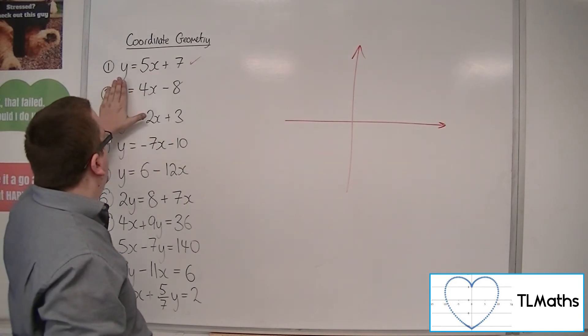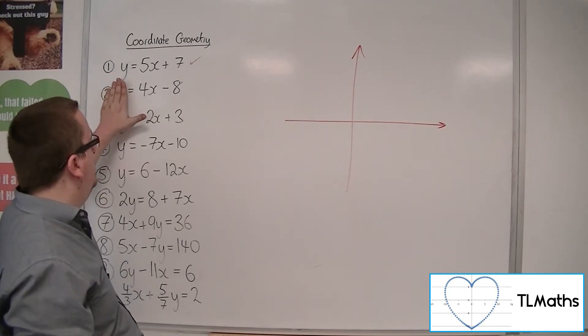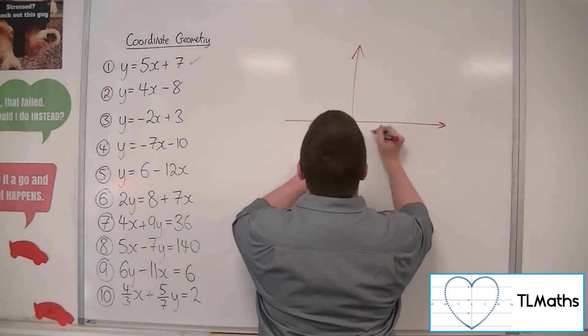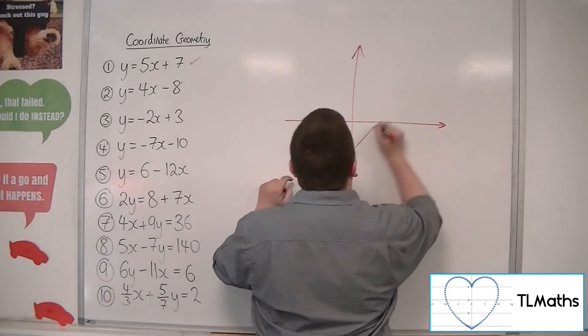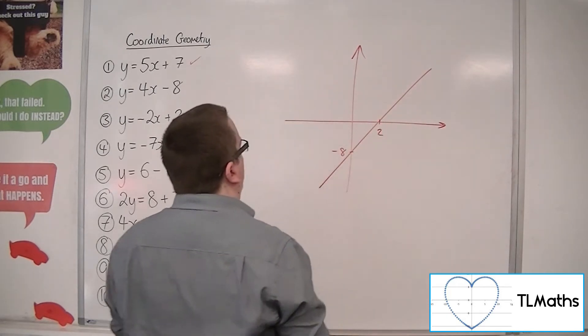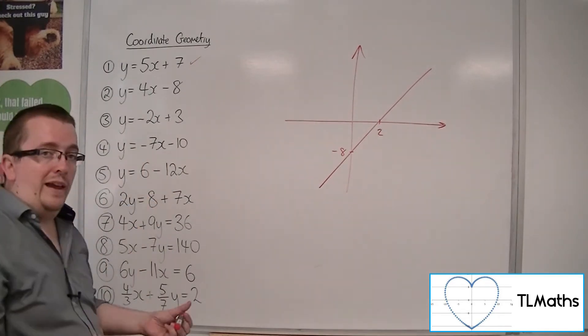And when y is 0, we can add 8 to both sides, divide through by 4, which gets us 2. So it's crossing through at minus 8 on the y-axis, 2 on the x-axis, so something like this. There's minus 8, and there's 2. Okay, and that would be a sketch of this line, the y equals 4x minus 8.